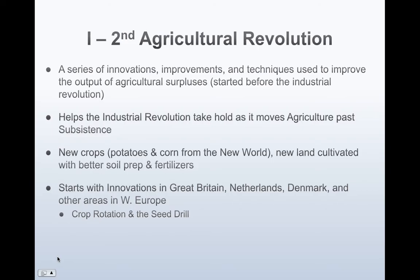The second agricultural revolution: a series of innovations, improvements, and techniques used to improve the output of agricultural surpluses, started before the industrial revolution. We had the first agricultural revolution where we stopped being a nomadic people — we were no longer hunters and gatherers. The second agricultural revolution is when we see the improvement upon how we actually cultivated that food.